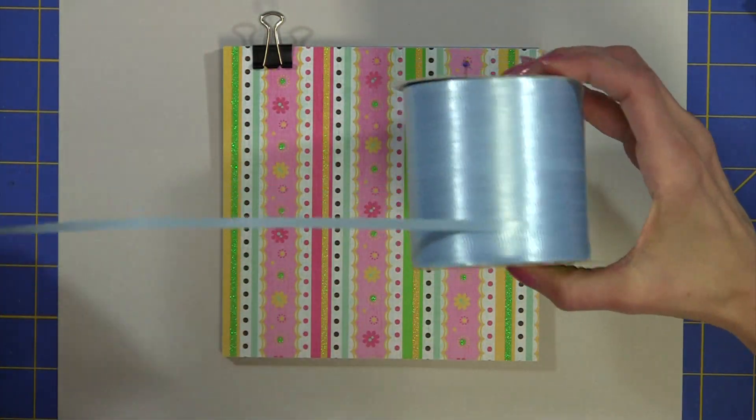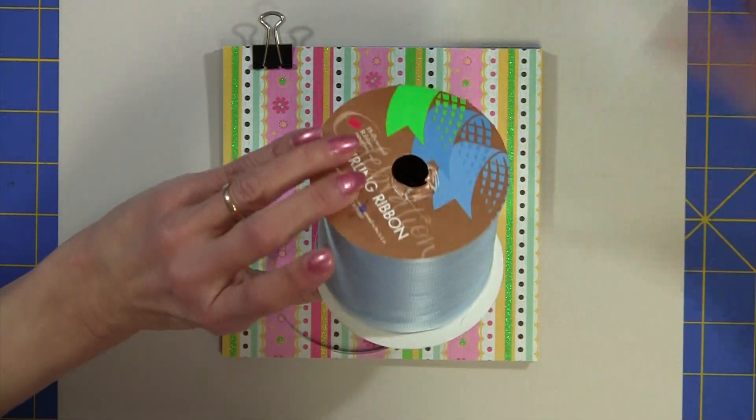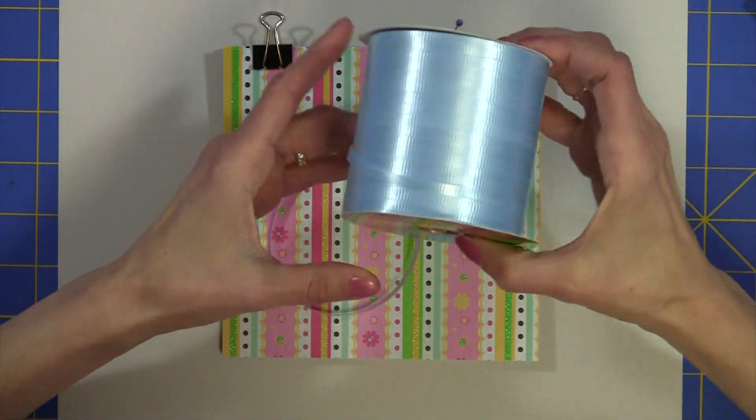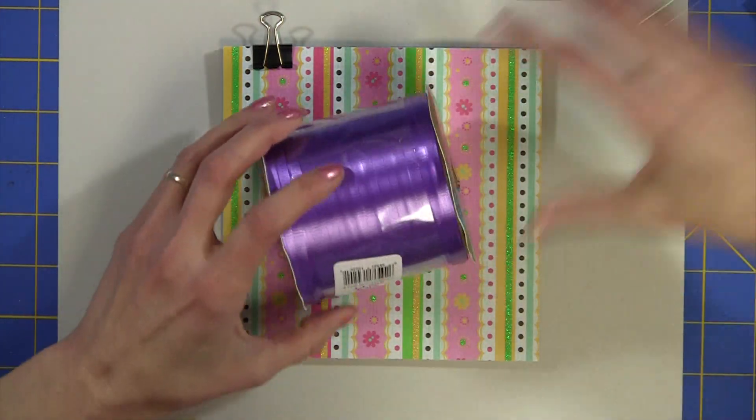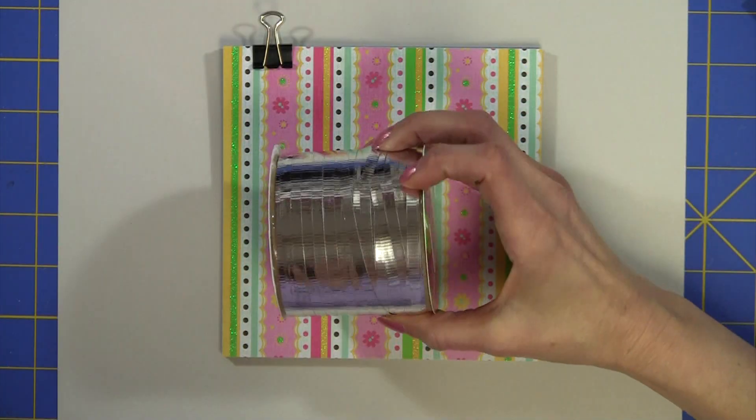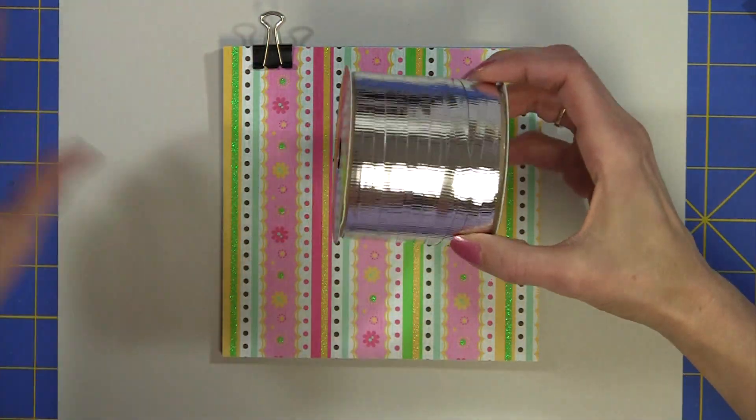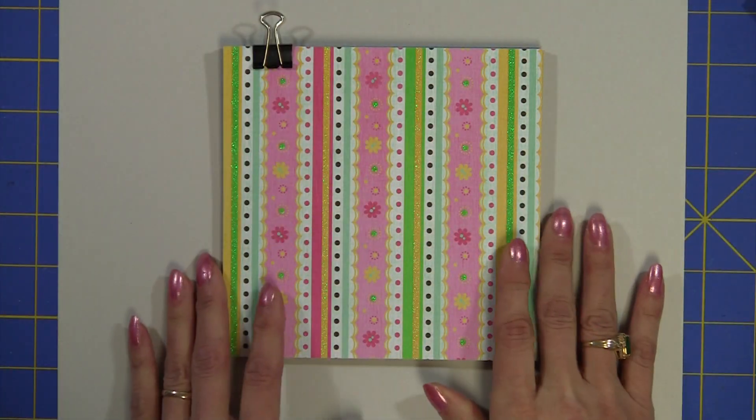But I found this great ribbon at the dollar store. It is 300 feet for a dollar and it comes in just fun, fun colors and it also comes in this metallic which I think would be just fun to add. You could add it in with your white ribbon or do a whole bow with metallics.